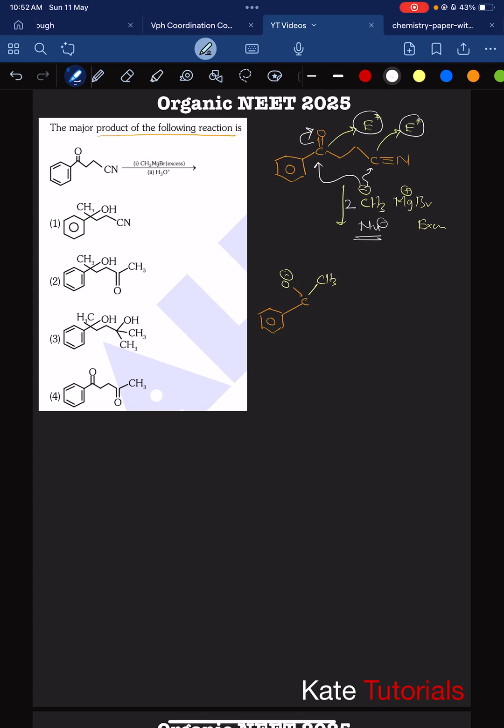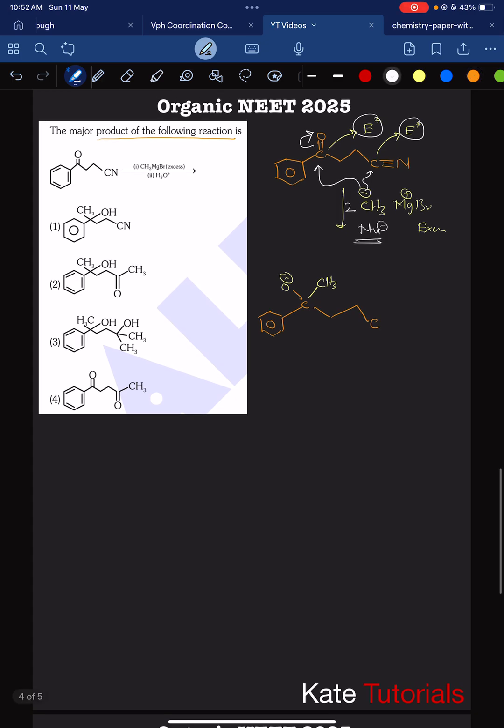As we know the Grignard reagent R minus attacks, this oxygen will shift here, we will get negative charge and other things CH2, CH2, C. Here what happens as CH3 attacks here, so CH3 attacks here, the triple bond was there, it will become double bond and N minus we get.